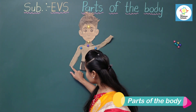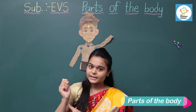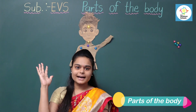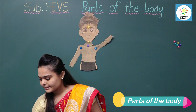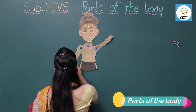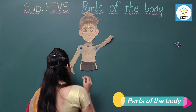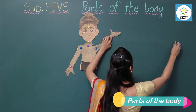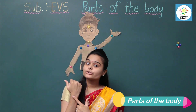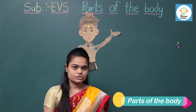Next one — this part is wrist. Wrist joins the palm and arm together. We wear a watch on our wrist.